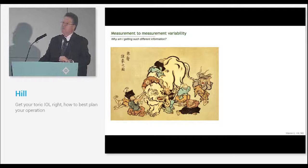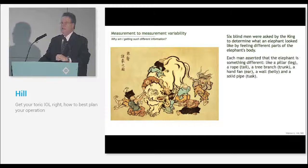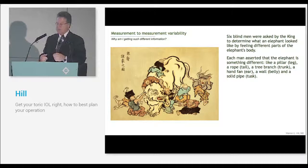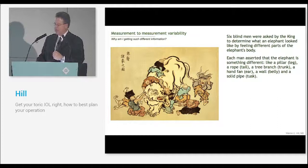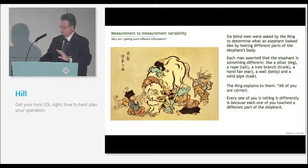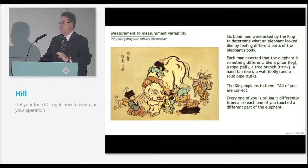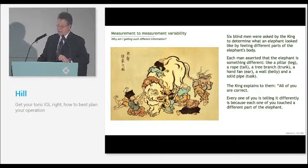I'm reminded of that famous old story about the six blind men who were asked by the king to describe an elephant. Each man asserted that the elephant had different characteristics. To the blind man with his hands on the leg it was like a pillar, to the man with his hand on the ear it was like a fan. Each person described the elephant differently and they were perfectly honest and perfectly accurate but they were looking at a different part of the elephant.